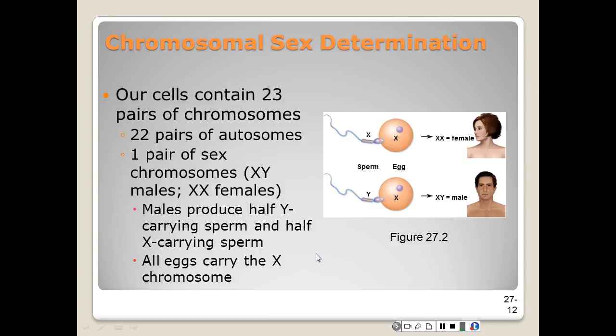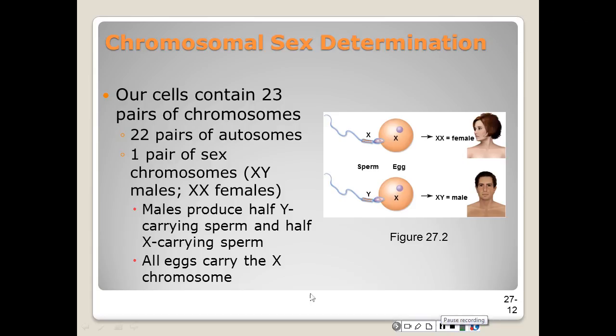Let's look at chromosomal sex determination. Our cells contain 23 pairs of chromosomes: 22 pairs of autosomes and one pair of sex chromosomes. XY would be the males, and XX would be the females.